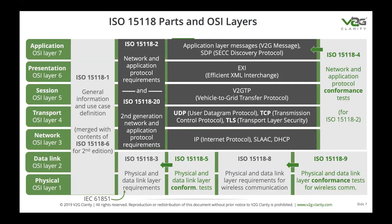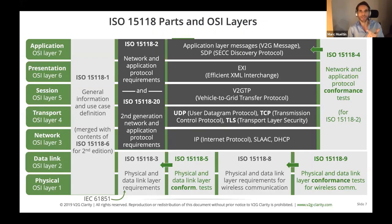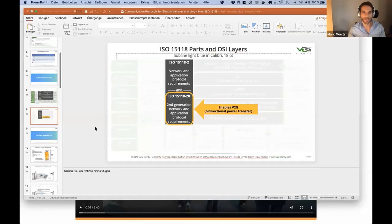CCS (Combined Charging Standard) is the set of hardware and software standards under which ISO 15118 is part. CCS defines that for DC charging you can use DINSpec and ISO 15118 depending on the version. The combo-2 inlet at the electric vehicle combines the Type 2 AC interface on top with dedicated DC pins below — that's what makes the combo. Combo-1 is used in the United States.